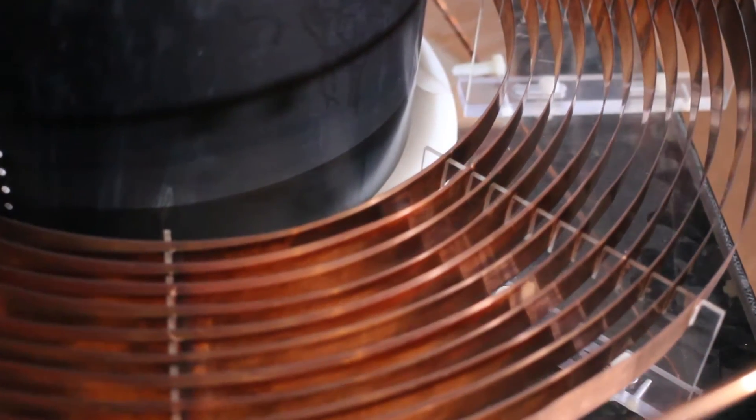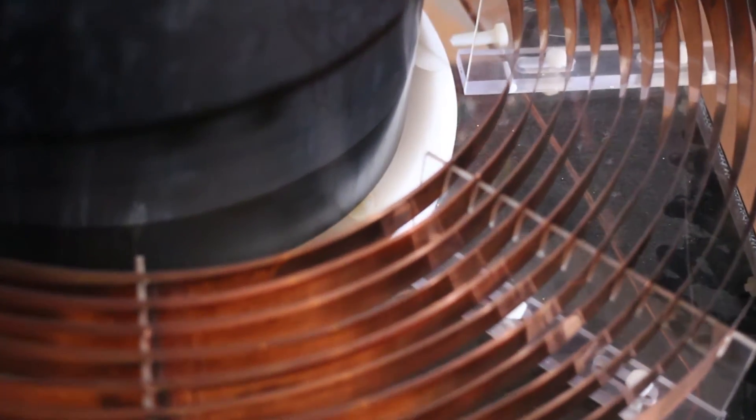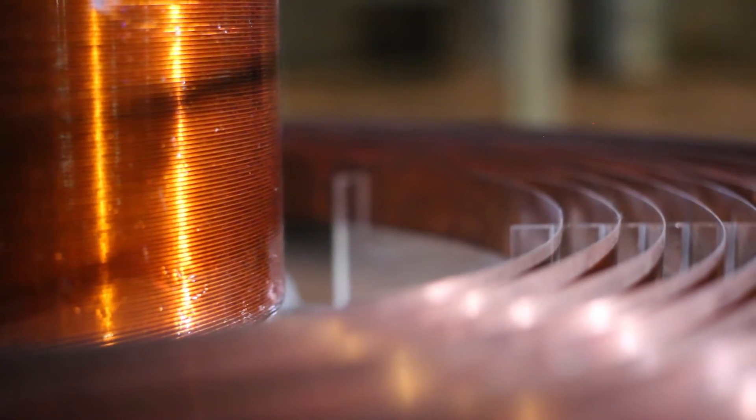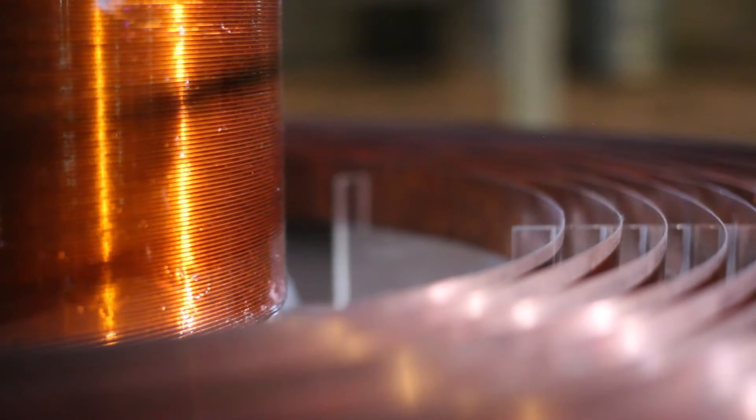This is where magnetism plays its part. As the primary coil receives electricity, it creates a magnetic field inside the secondary coil of wire without touching it, which allows for a huge step up in voltage until it reaches the top of the toroid.